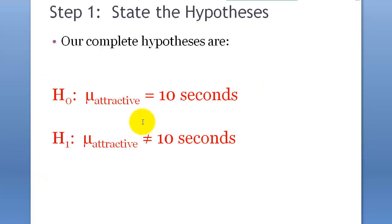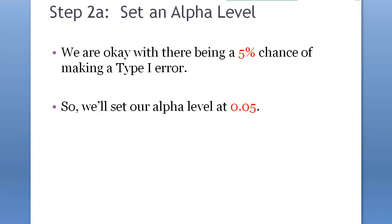You can use special notations. And also, again, this is kind of a psychological and educational or social studies. So, we're going to use 5% or 0.05 alpha level. In other words, we are okay with there being a 5% chance of making a type 1 error. So, we'll set our alpha level at 0.05.